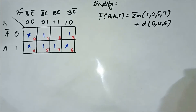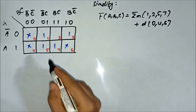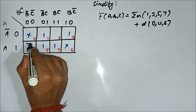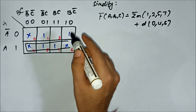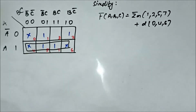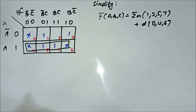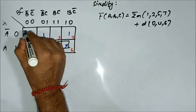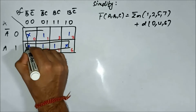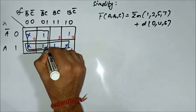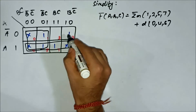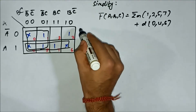Now we will form the groups. We can form a quad involving cells 4, 5, 7, and 6. Then we will form another quad involving cells 0, 1, 4, and 5, and then another quad involving cells 0, 4, 2, and 6.